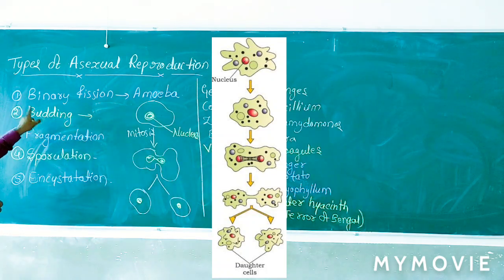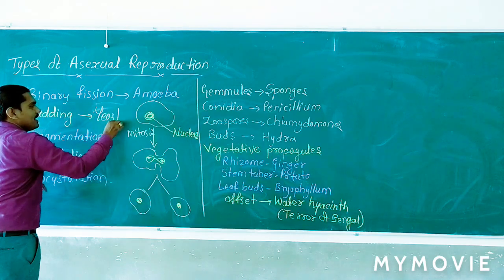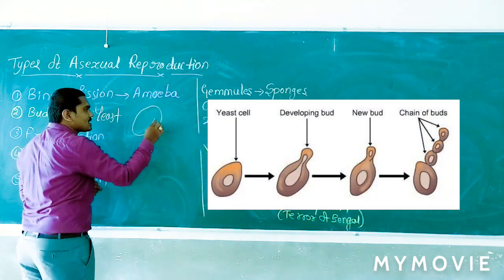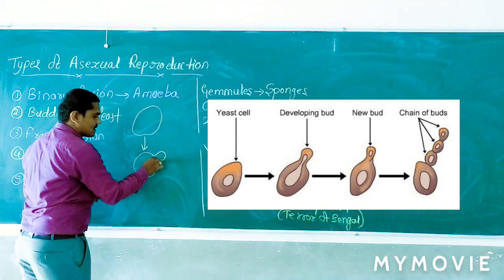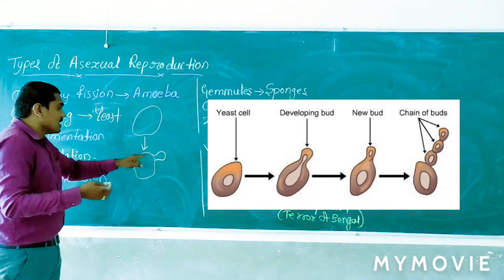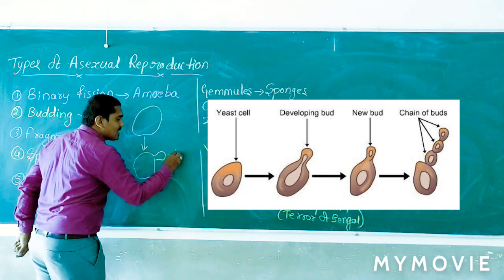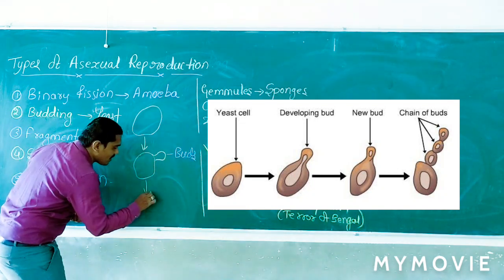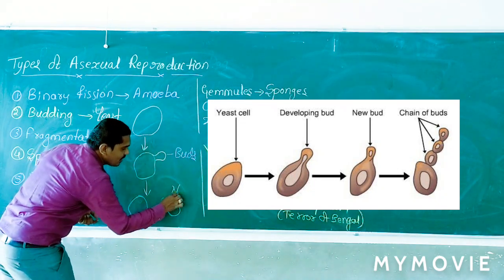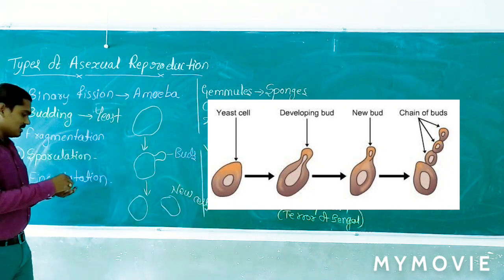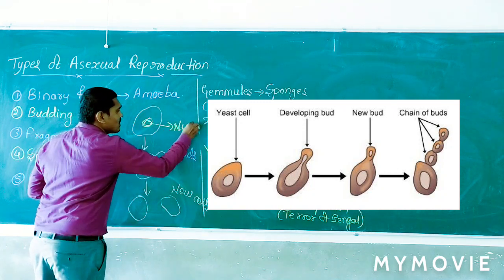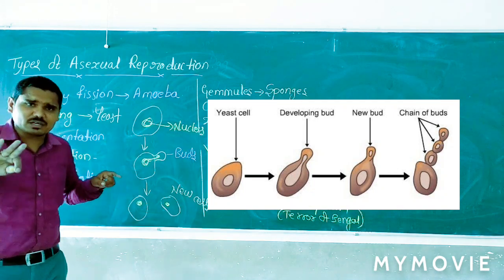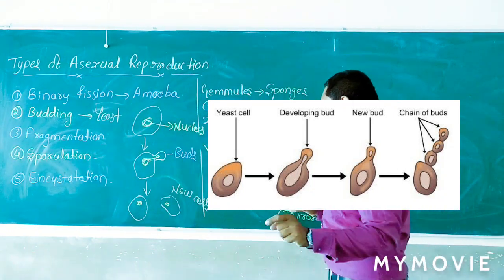The next type is budding, which commonly occurs in the yeast cell. This cell also has a spherical structure. At the time of their growth, they form an outgrowth — an outer cell — which is called a bud. Due to their growth and differential cell fusion process, this extracellular outgrowth forms. In later stages, after maturation, the bud gets separated from the parental body and forms an individual new cell. The nucleus is also equally distributed at the time of bud formation, and upon final separation the bud gives rise to an individual organism. This is called budding.